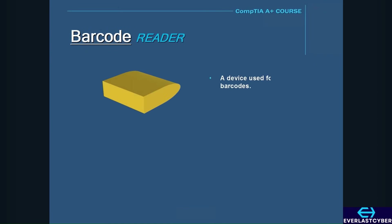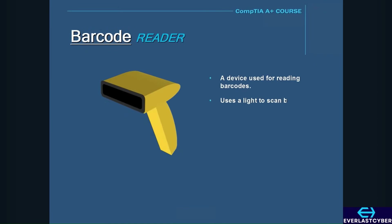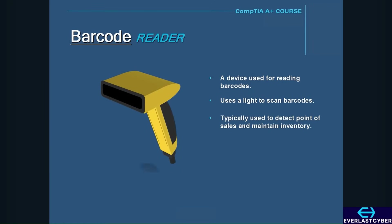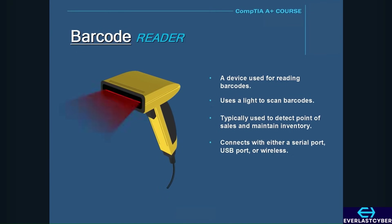A barcode reader is a device used for reading barcodes. It uses light to scan barcodes and is typically used to detect point-of-sale transactions and maintain inventory. It can connect to a computer through a serial port, USB port, or a wireless connection. Barcode readers come in several forms, but the most popular is the handheld trigger type.